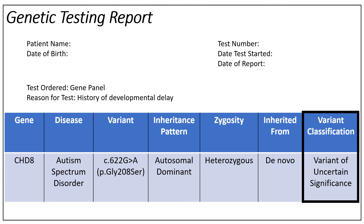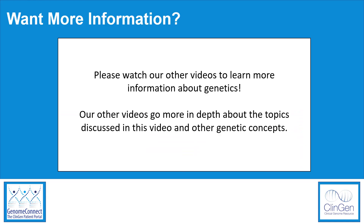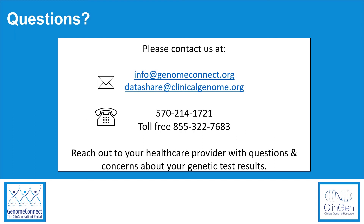For additional information about specific terms you have heard in this video, or for more information about other terms on your or your family member's genetic test report, please watch our other videos. Thank you for watching our video about how to read your genetic test report. If you have general questions about this topic or other genetics-related topics, you can reach us at info@genomeconnect.org or by calling 570-214-1721 or toll free at 855-322-7683. If you have questions about your genetic test results, we encourage you to reach out to your doctor or genetic counselor.